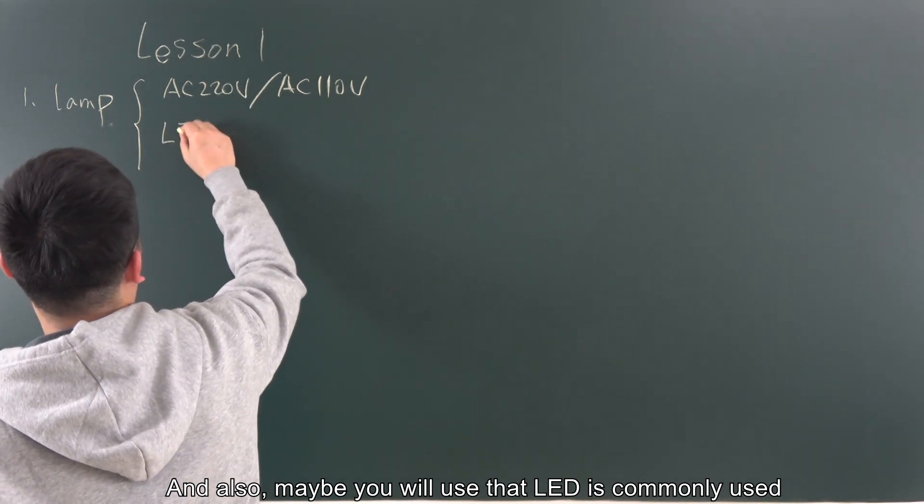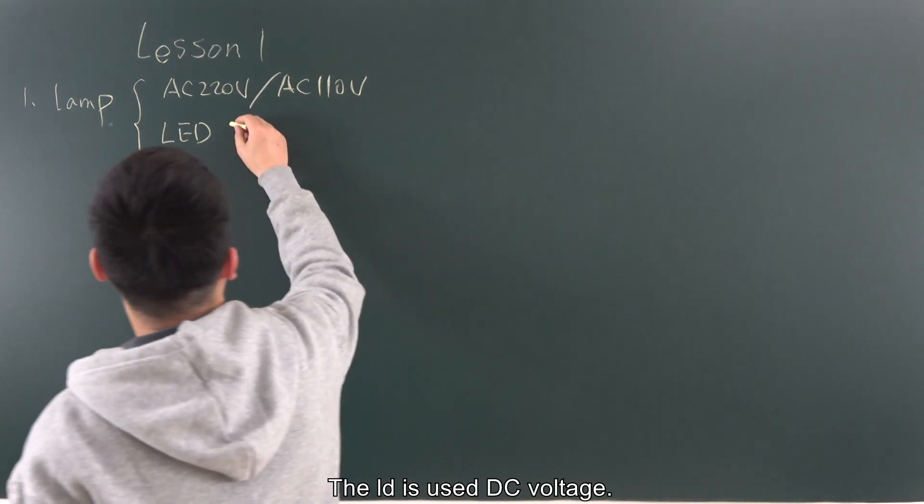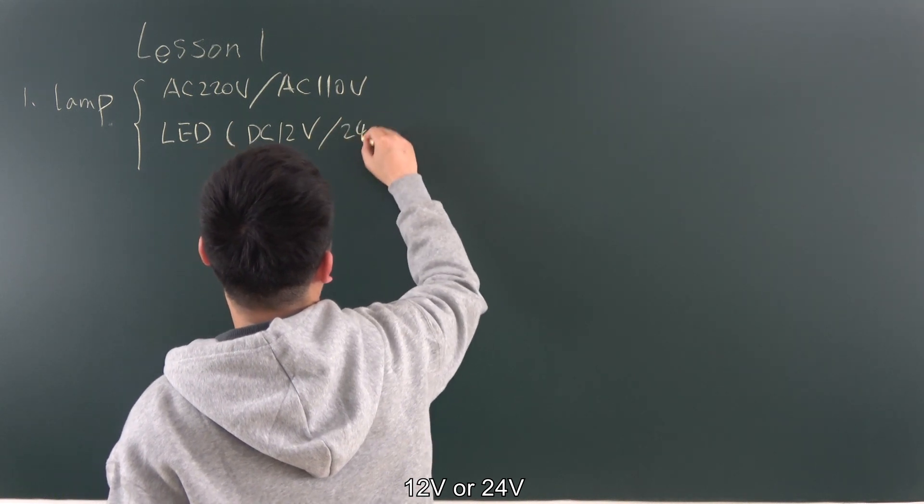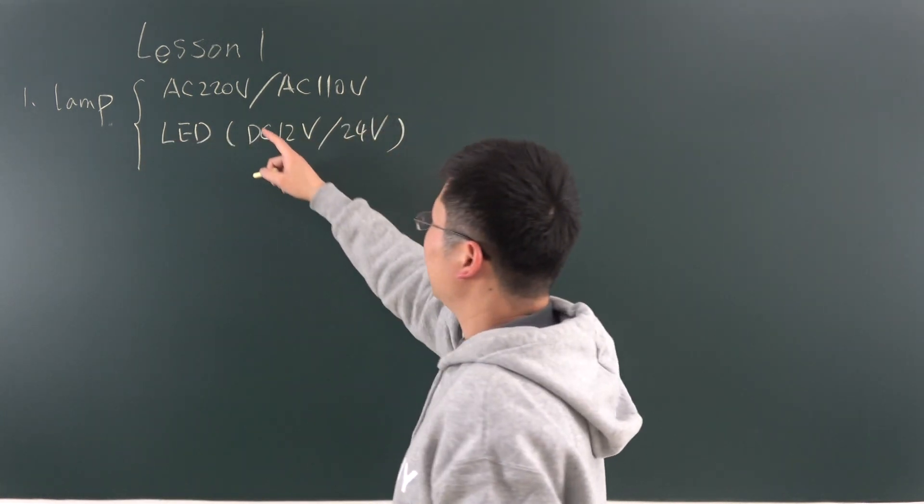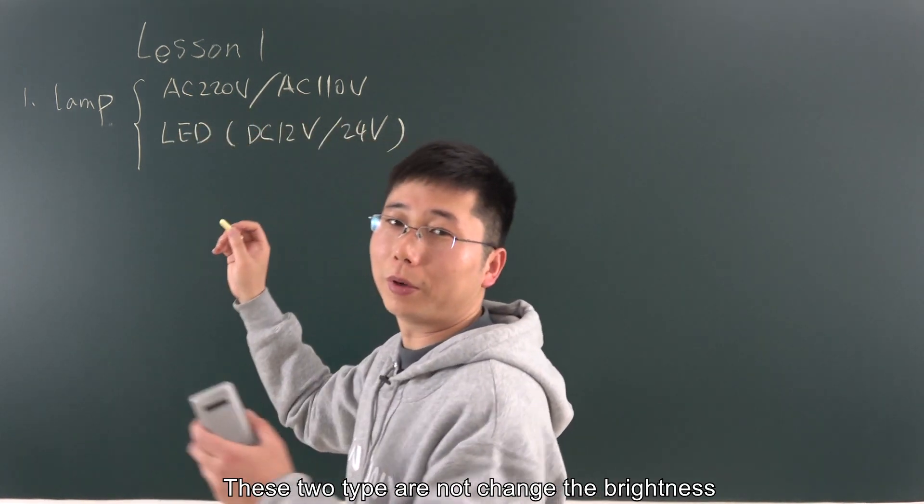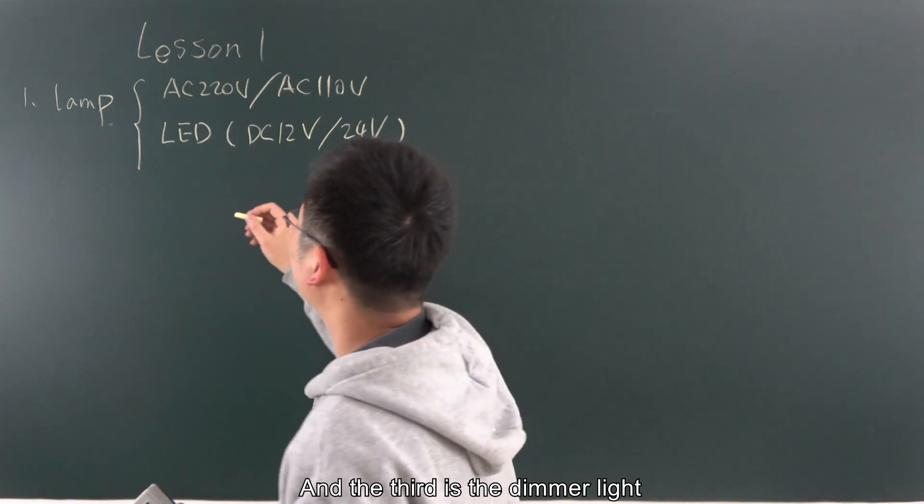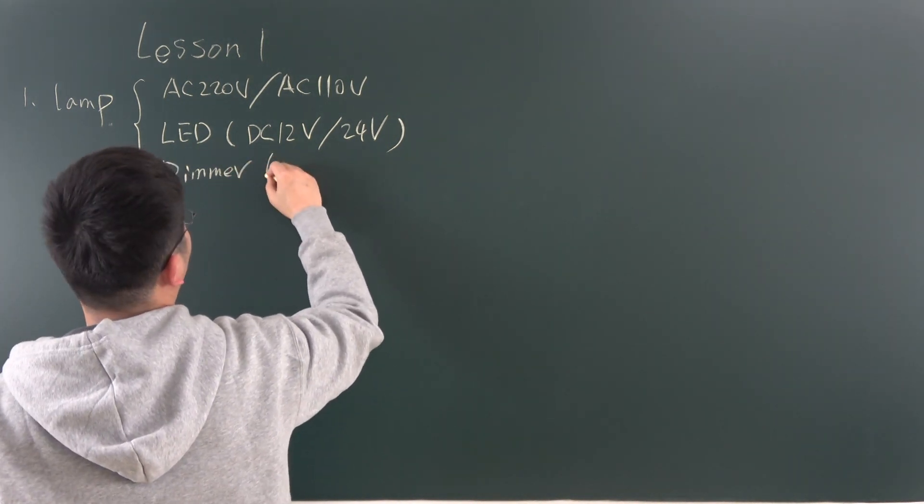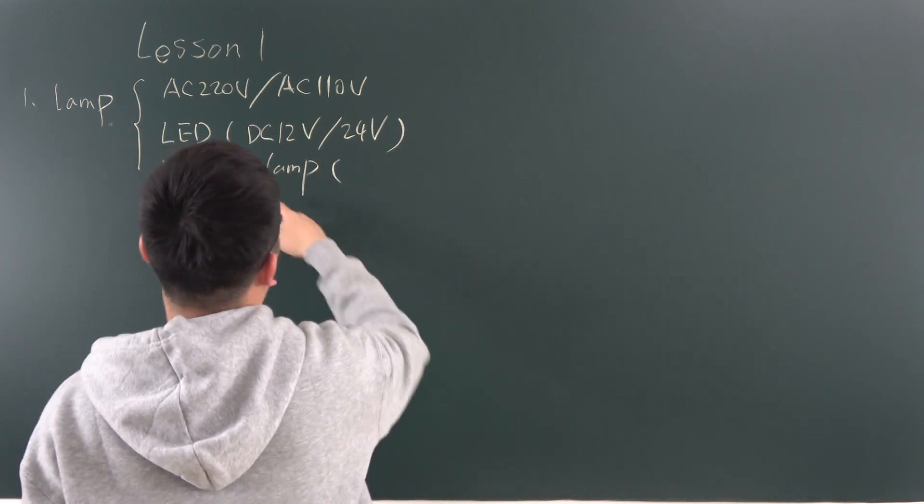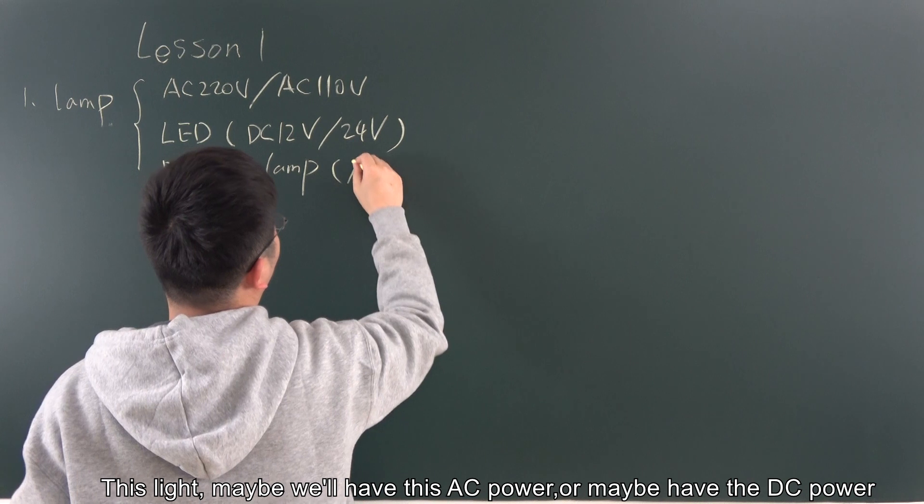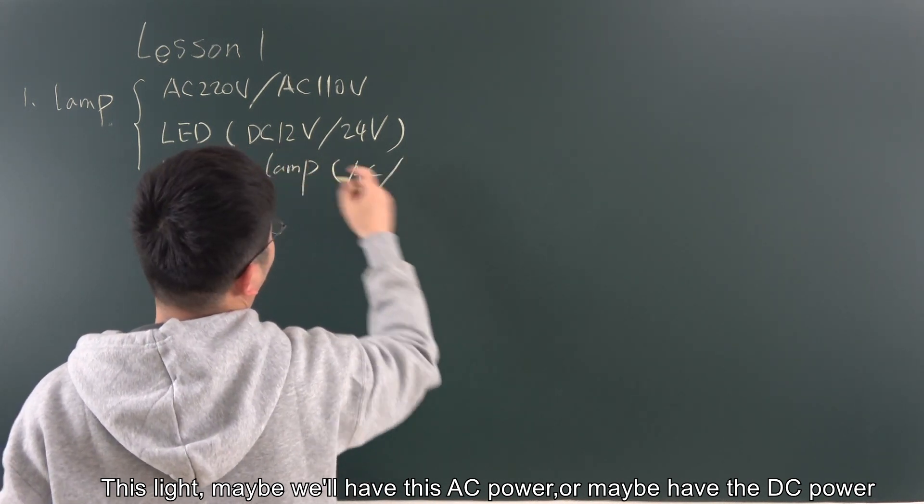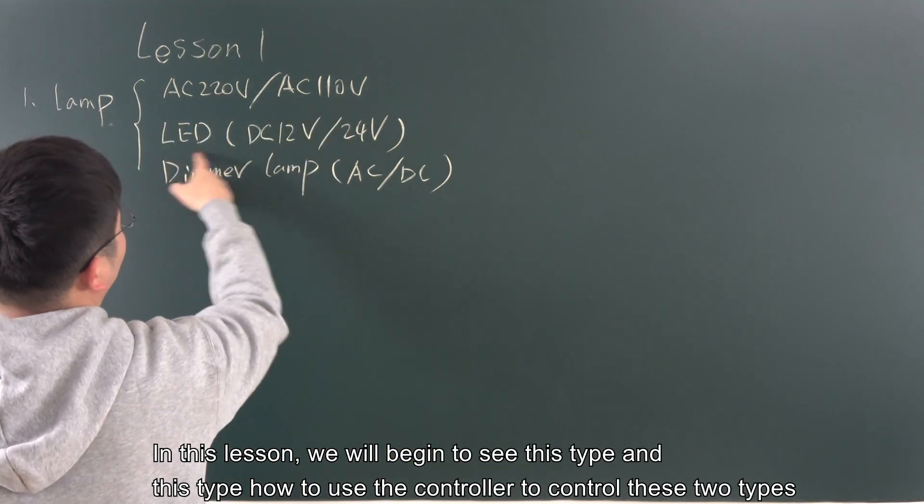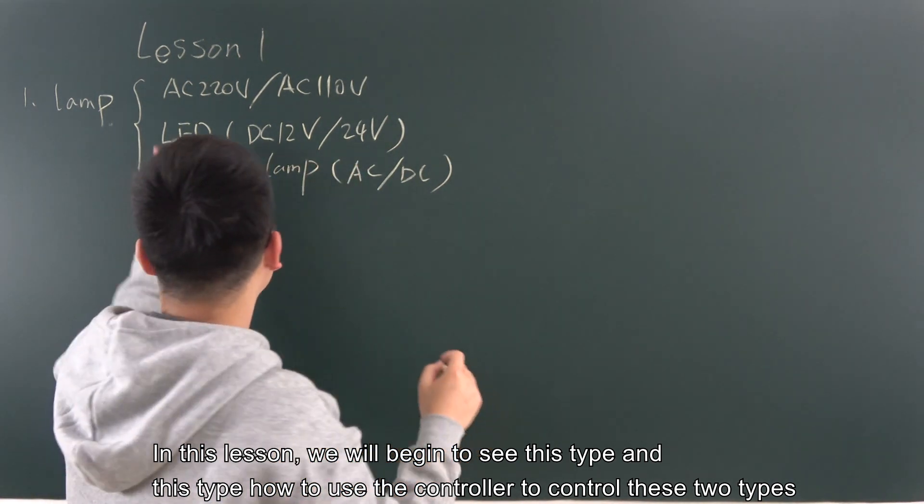And also, maybe you will use the LED. It is commonly used. The LED is used DC voltage to have 12 or 24 voltage. And these two types do not change the brightness. And the third is the dimmer, dimmer light. So in this lesson, we will begin to see this type and this type. How to use the control light to control these two types.